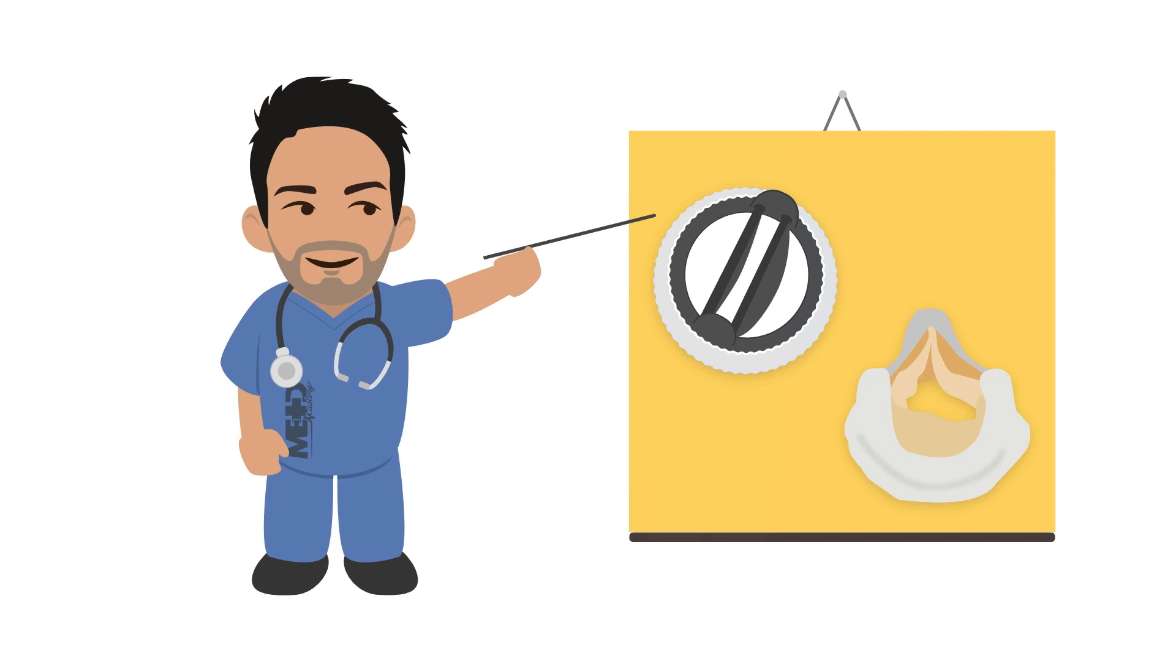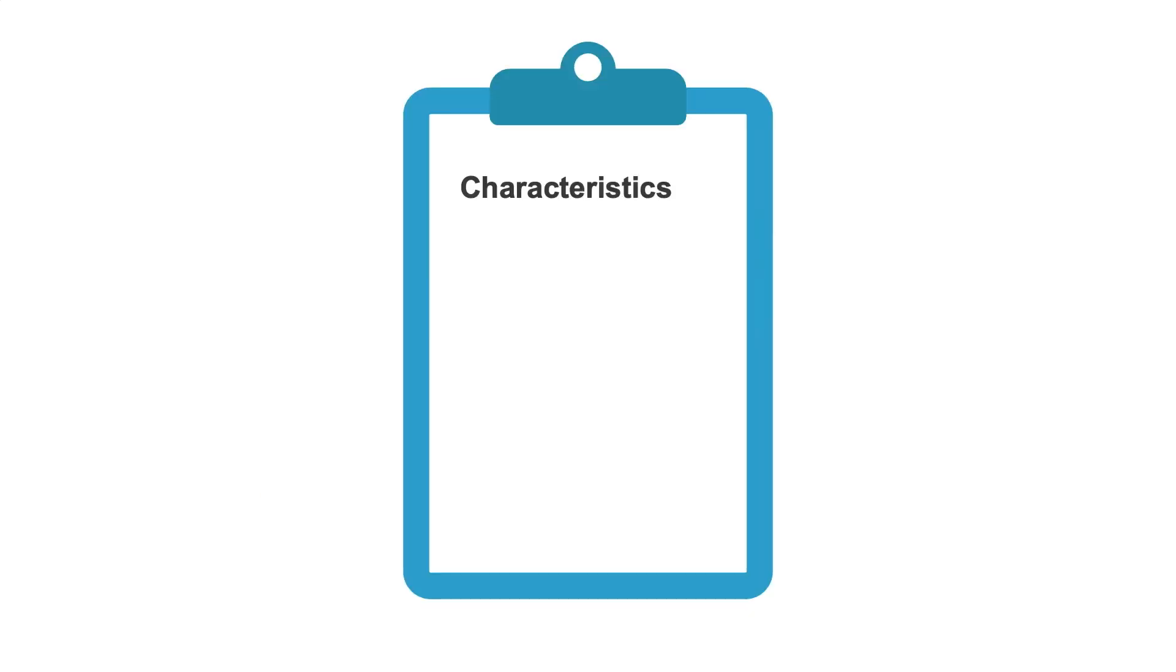The ideal prosthesis should mimic the characteristics of a normal native valve, including excellent hemodynamics, implantability and durability. It should also be highly resistant to platelet and thrombus deposition, structural wear and tear and mechanical failure. Unfortunately, this ideal prosthetic valve does not exist and each of the currently available ones has inherent limitations.